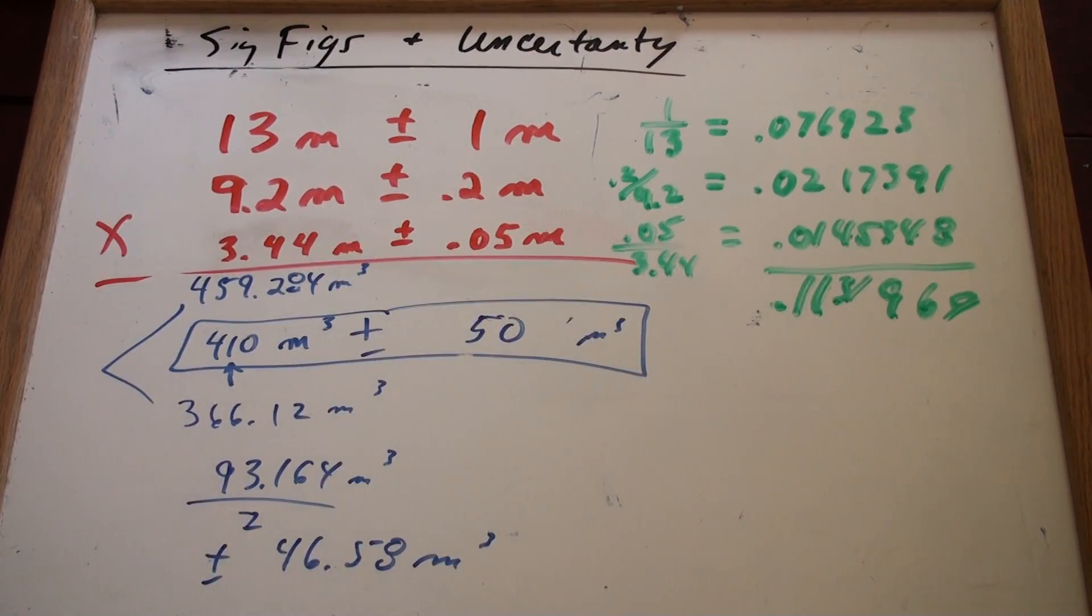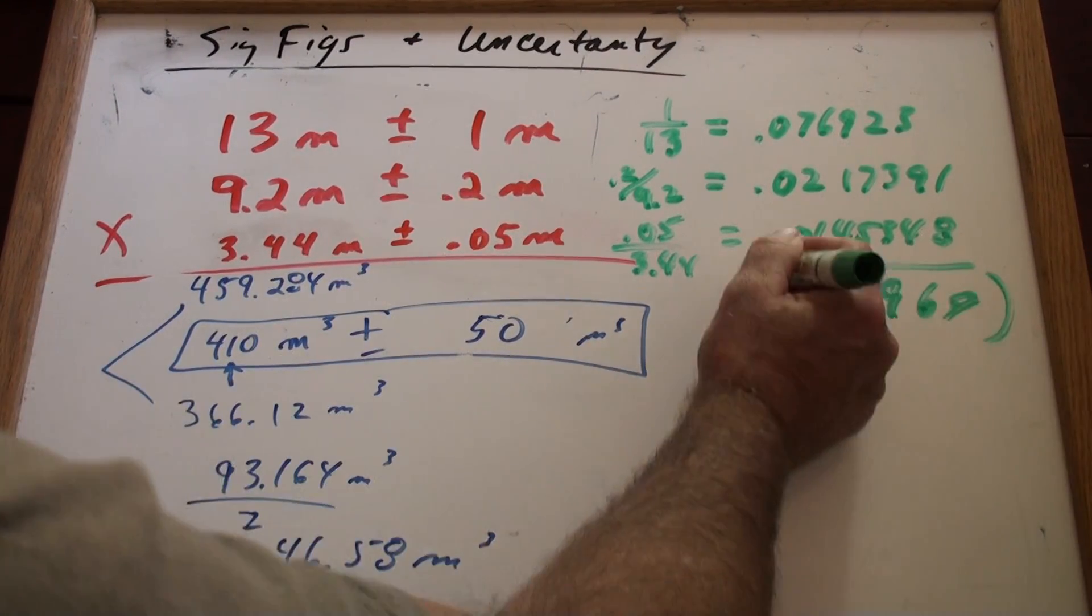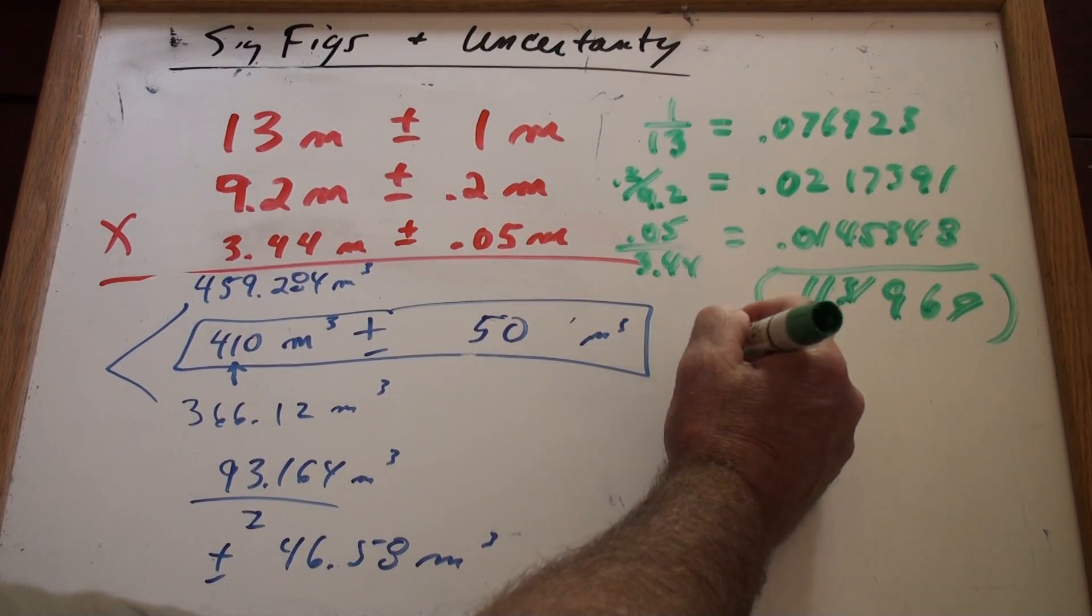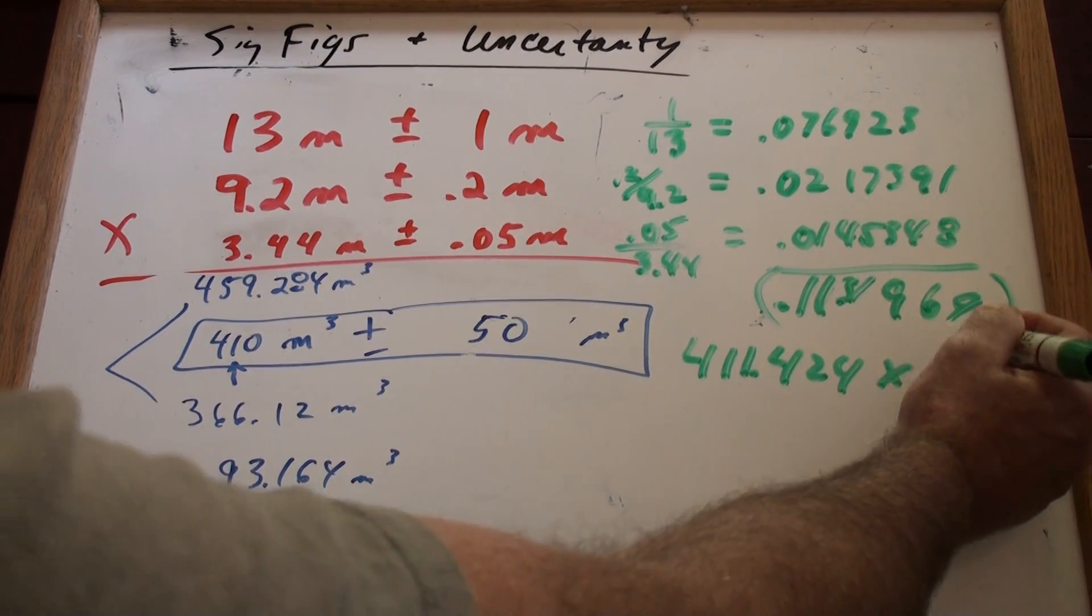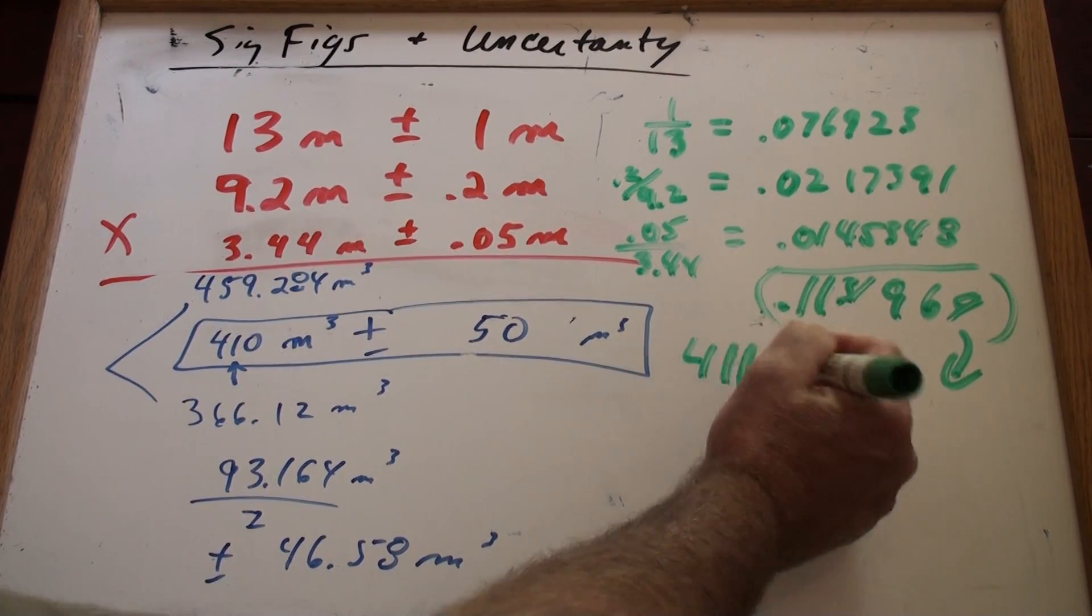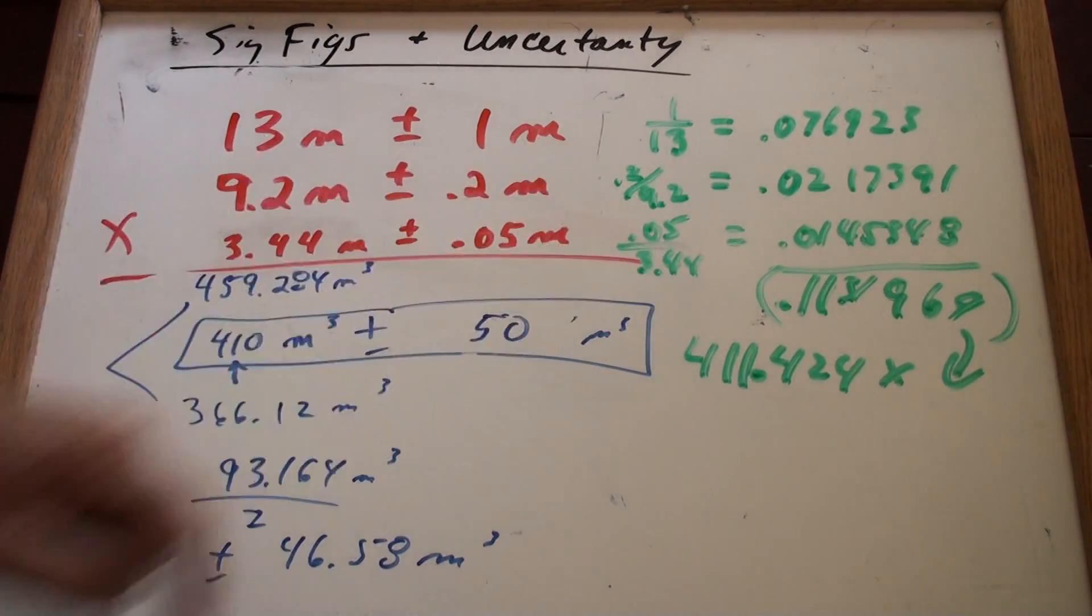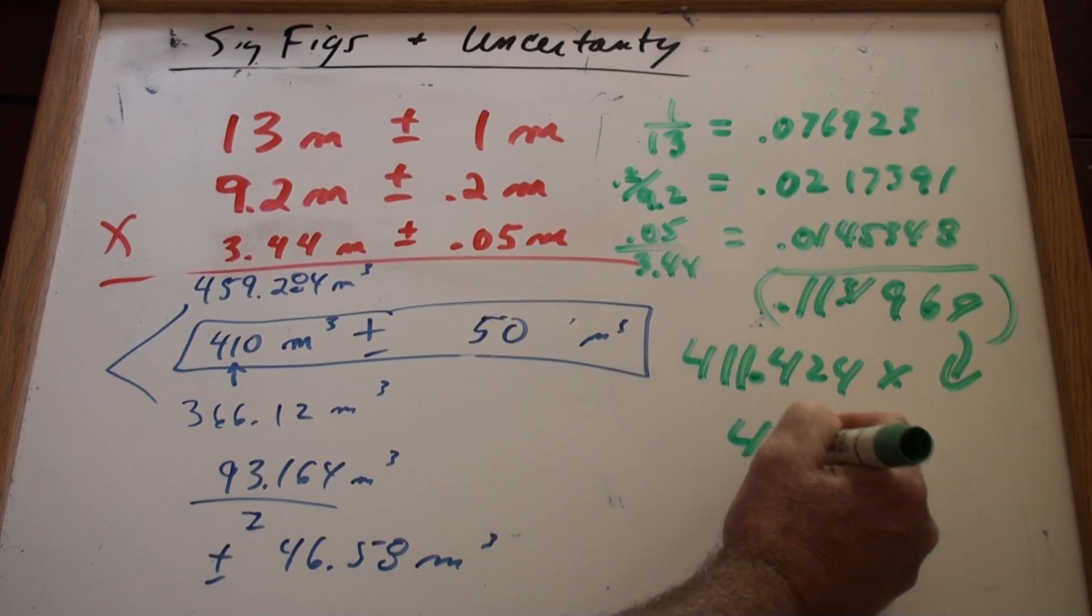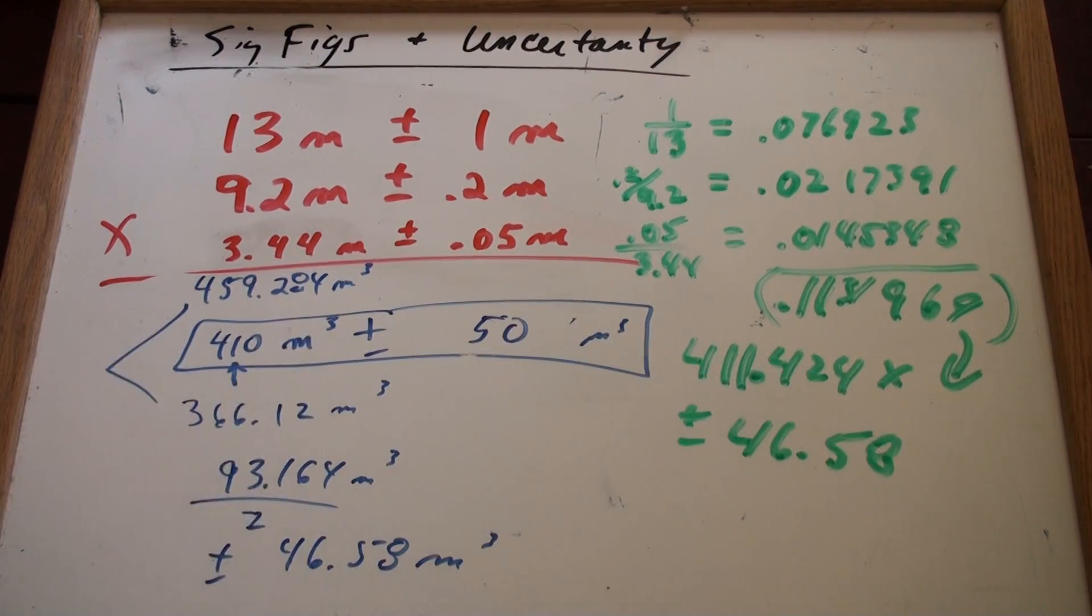these add 7.7% plus another 2% plus another 1.5% comes out to about 0.1131969. 0.11 means about 11%. So now, take the 0.11 and multiply that by the number. What number? The actual original volume, which was, I think, 411.424, and then times this number. 411 was before you rounded it to 410. So if you multiply that number times that number, son of a gun, if you don't get something like 46.58. Sound familiar? Plus or minus 46.58.